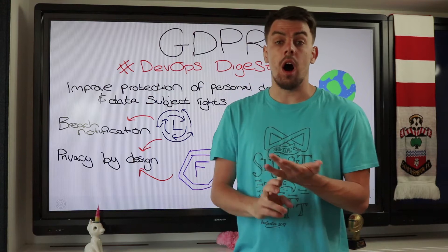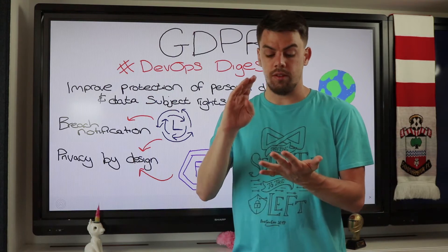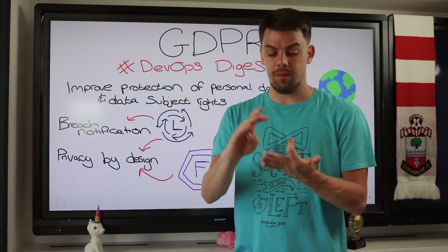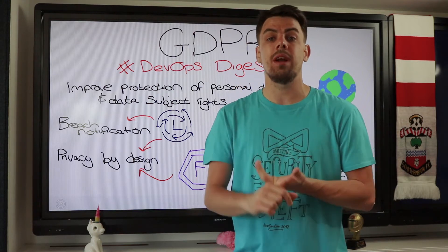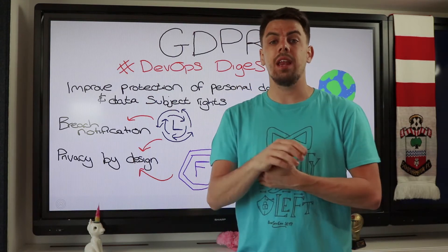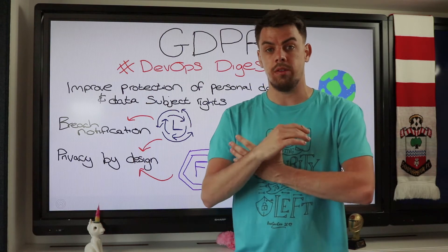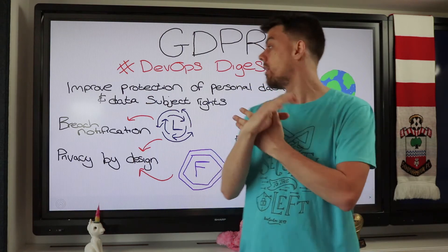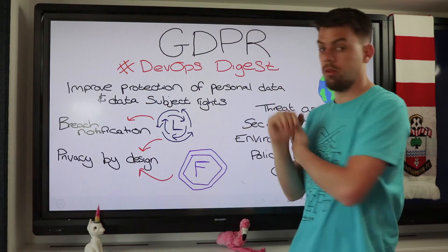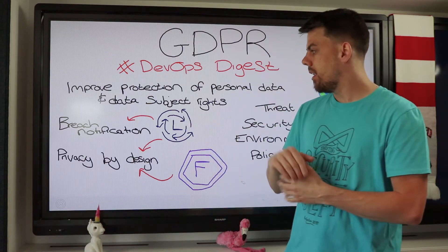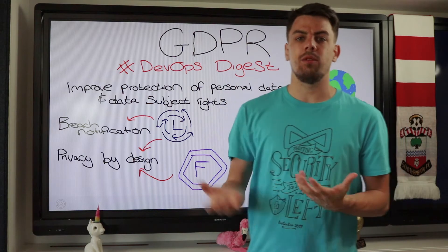Personal data includes IP addresses, names, telephone numbers, email addresses — anything that could be related back to a person is considered personal data.